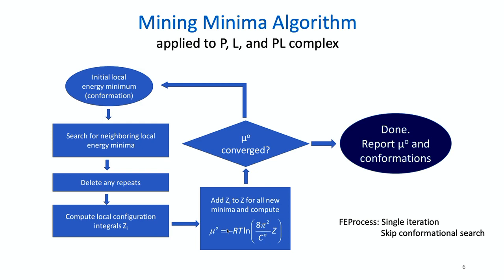This is an iterative procedure. The first time around, we take the lowest energy minimum found so far and seed the next conformational search. If we find new lower energy minima, the chemical potential will be lower and we're not converged, so we keep going around until we stop finding lower energy minima. Then we're converged, and we report the chemical potential and output conformations.